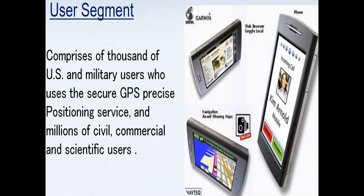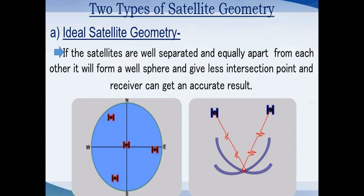The third one is the user segment. We have lots of devices — mobile phones, smartphones, smart devices, tablets, smart screens, touchscreens, web browsers, local navigation, and lots of maps. These comprise thousands of users. We use precise positioning service, and billions of cities and commerce and security regions are using this GPS. We can find our location, find the location of other vehicles in our convoy, find the route, and find an optimized route to reach a destination.